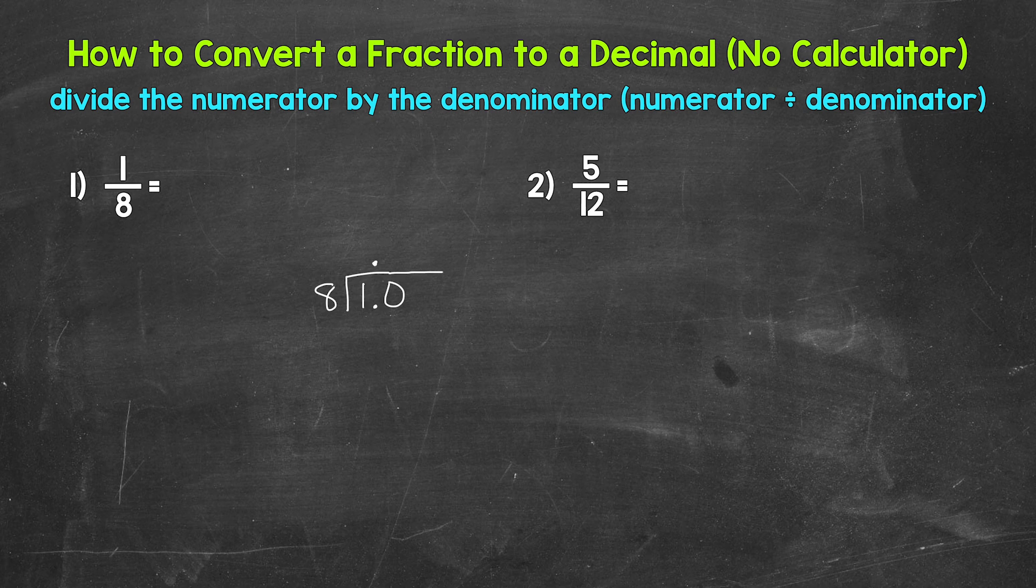Now, we can think of this as 10 divided by eight. So how many whole groups of eight in 10? Well, one. So we need to put the one above the zero. Make sure that one is above the zero, not the one. We used that zero in the tenths place and thought of this as 10. So the one needs to go above that zero in order to keep everything lined up correctly. Now, we multiply one times eight, eight.